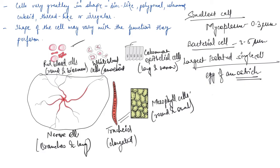So guys, with this we have started off with the basics of cell. We have covered the overview of the cell and the cell theory. I hope you understood these basics. Later on in different videos, we are going to cover the entire different types of cells — prokaryotic, eukaryotic, plant and animal — and then all the organelles as per the NCERT syllabus. Please do not forget to like this video, share it with your friends, and subscribe to the channel. If you have any doubts, message me in the comment section or via WhatsApp — the number is in the description.